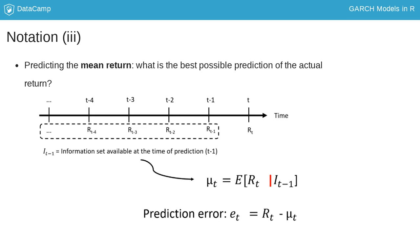Based on the information set you can then compute the expected return. This is the mean prediction denoted by mu_t. The prediction is of course not perfect. There is a prediction error E_t equal to the difference between the actual return and the predicted return.